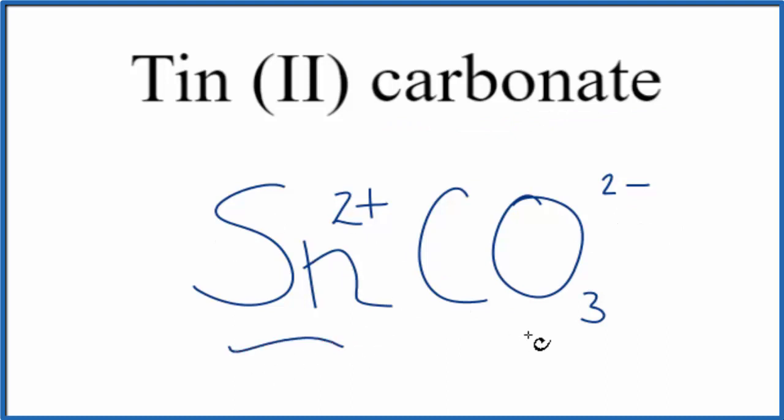We have tin, which is a metal, and carbonate, which is a group of non-metals. We have a metal and non-metals, so we have an ionic compound.